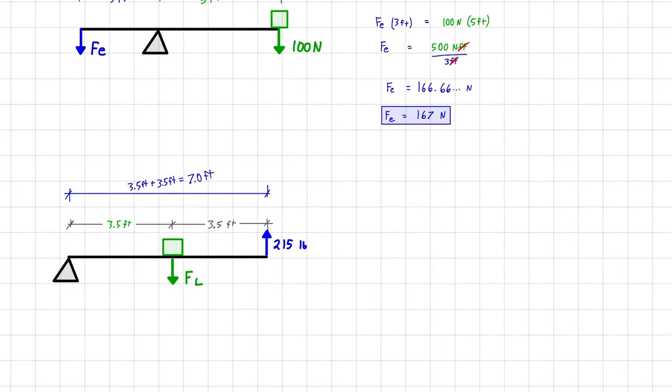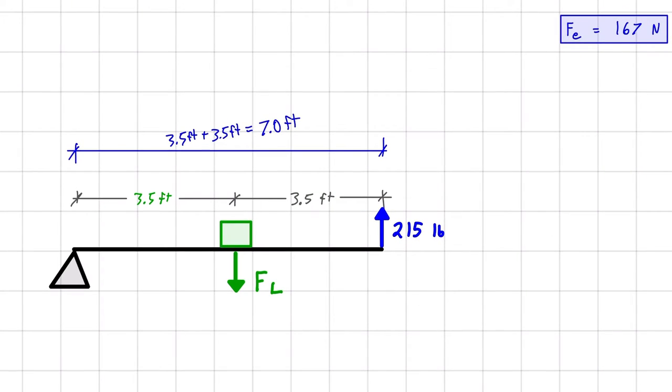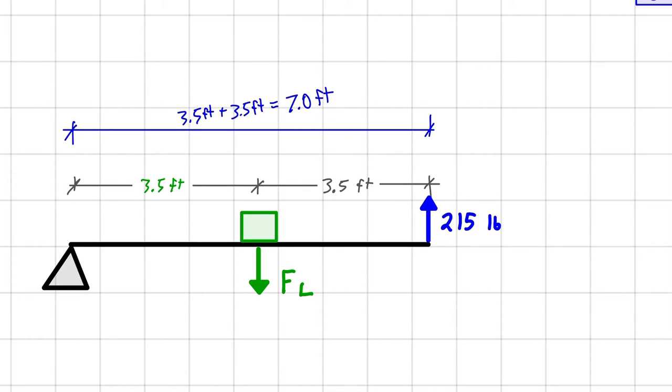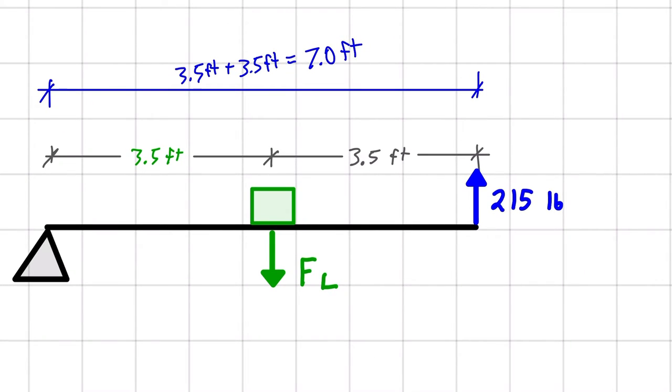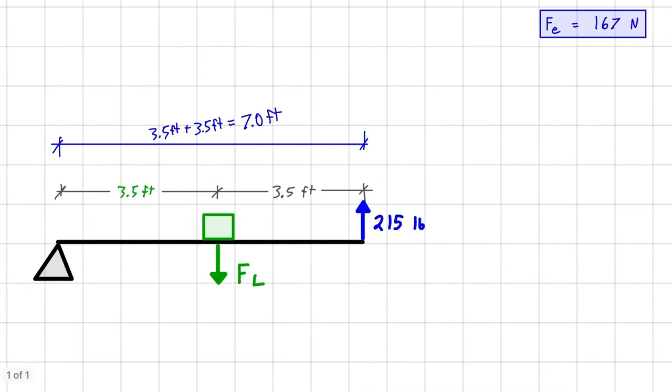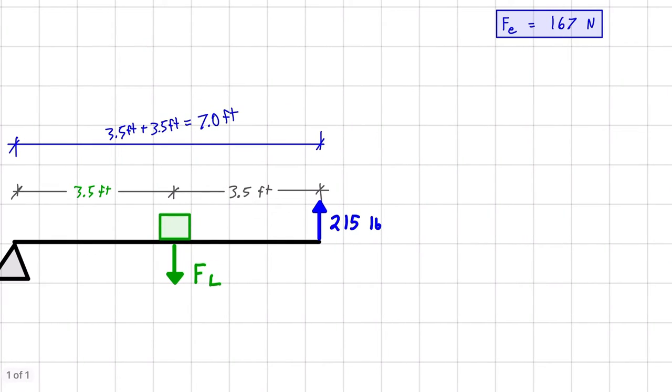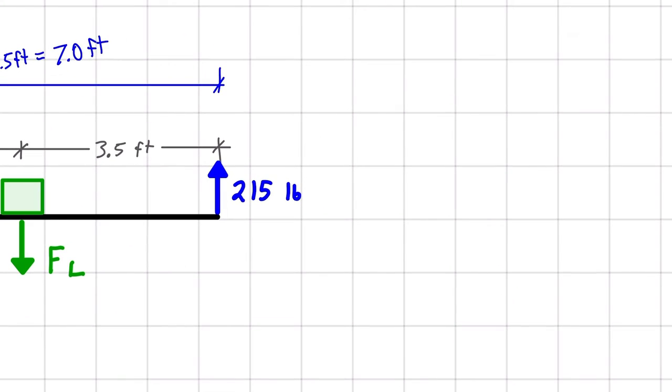All right, so that's the first example done. Let's do the second example now, where we are given the effort force, the effort distance, and the load distance. And our unknown is going to be the force of the load. So once again, let's set up our equation. So Fe times De is equal to FL times DL.